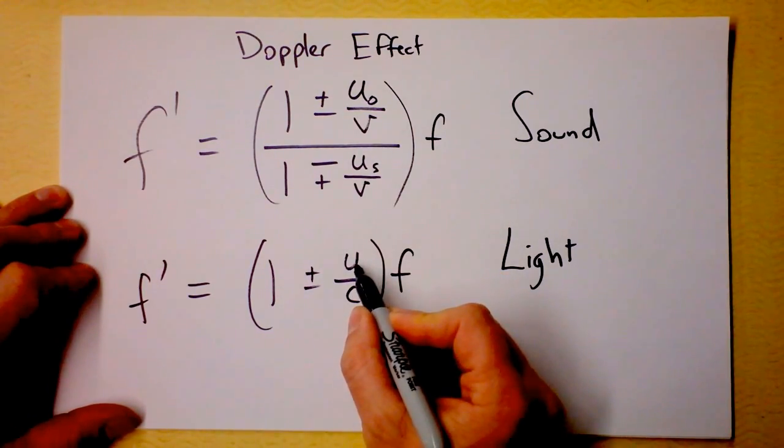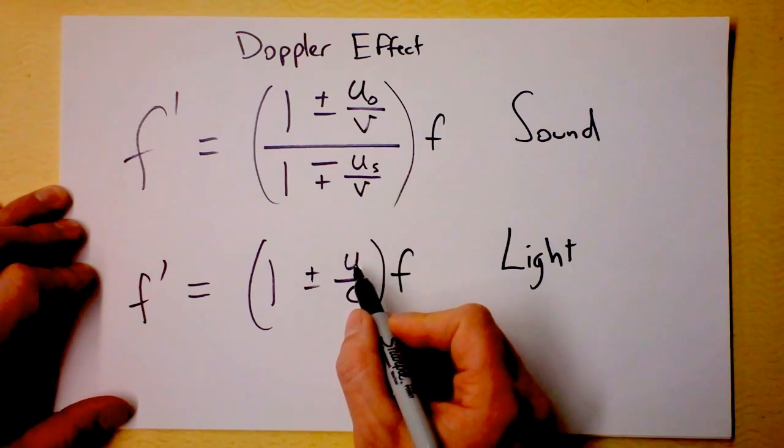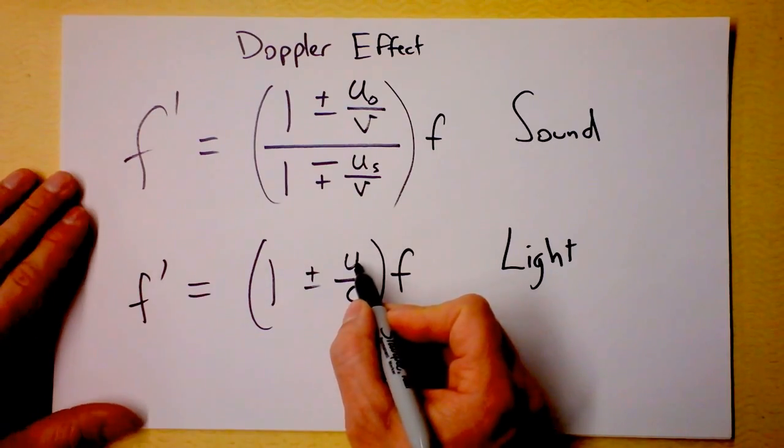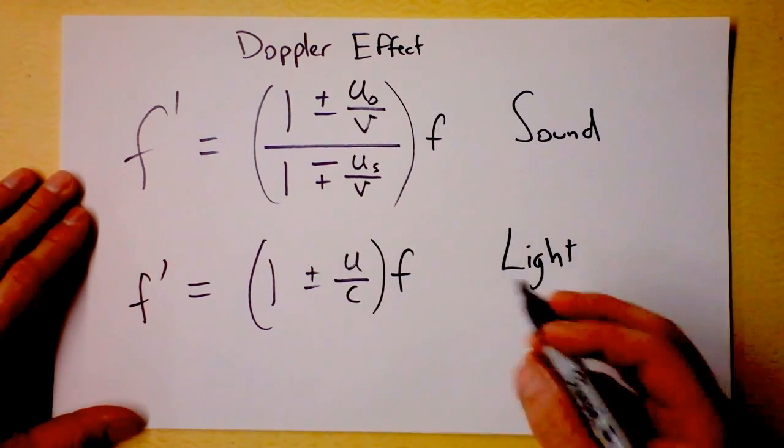If I'm moving towards the source of the light or the source of the light is moving towards me, either way, I'm going to get this change and this will be a positive number. But if I'm moving away, it'll be a negative number. So here's the thing.